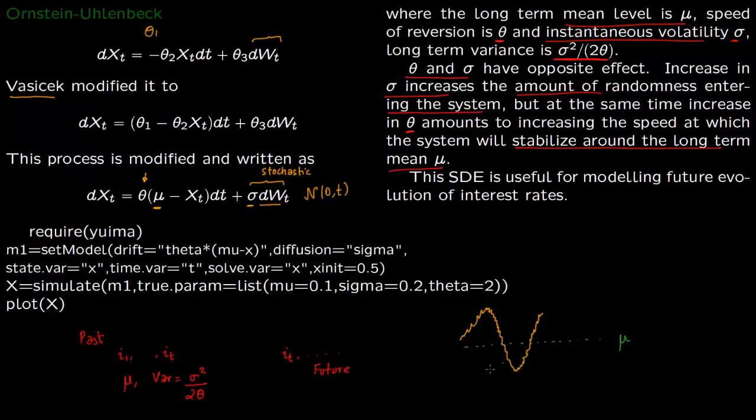And what is theta going to do? Theta is the part which fluctuates your interest rate around the mean. So if you increase the theta this will converge fast towards the mean. So theta is nothing but speed of convergence towards the mean.